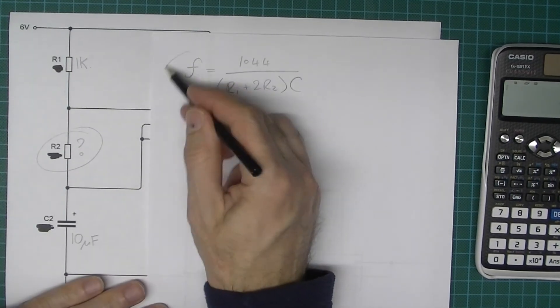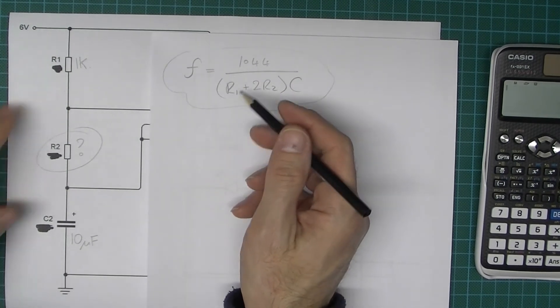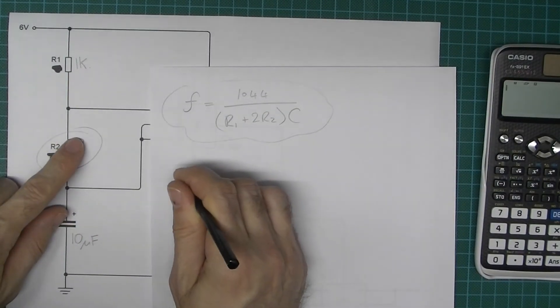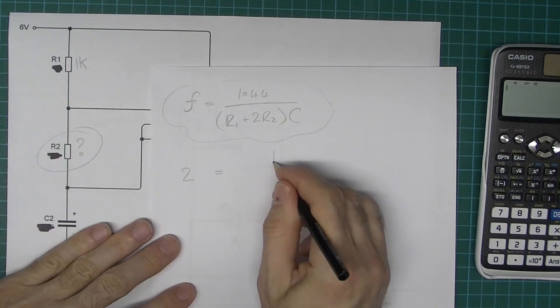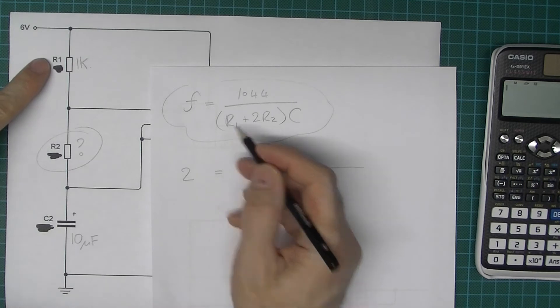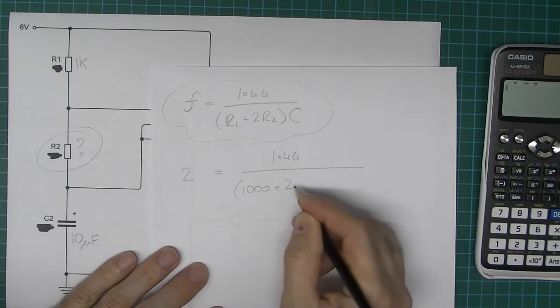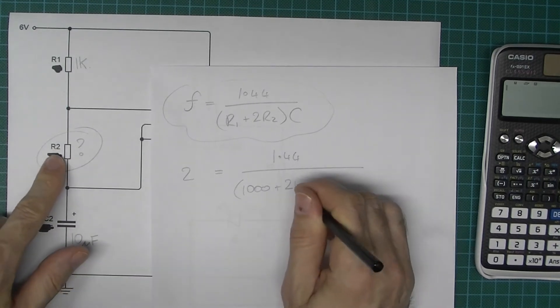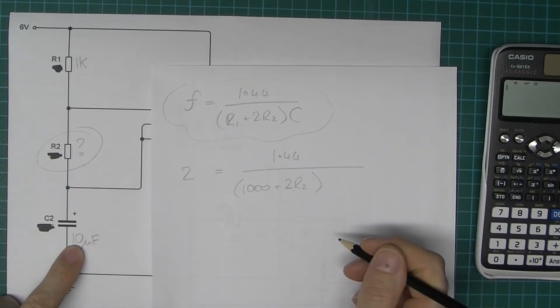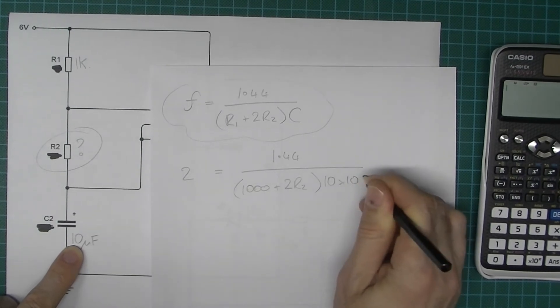So now that we've got this general formula here we can then put in the values that we already know. So we know the frequency which is 2 Hz, so the frequency is just going to be 2 equals 1.44. We know resistor 1 which is 1k, plus 2 and we don't know what R2 is so we leave that as R2. And we have decided that we're going to use, at least for the moment, a 10 microfarad so 10 times 10 to the minus 6.